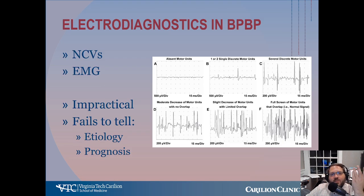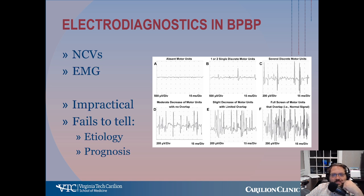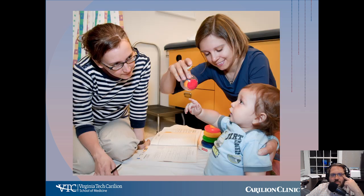Unfortunately there's not really a role for electrodiagnostics in brachial plexus birth palsy. Your traditional nerve conduction velocities and EMGs that you would get in adults are just not practical to get in babies — the babies aren't going to tolerate being stabbed with needles and shocked with electricity. But by and large, these studies also can't tell the etiology — they can't tell you avulsion versus stretch, especially when they're mixed — and they can't tell prognosis. For those reasons, electrodiagnostic studies just aren't that valuable in the management of obstetrical brachial plexus palsy.